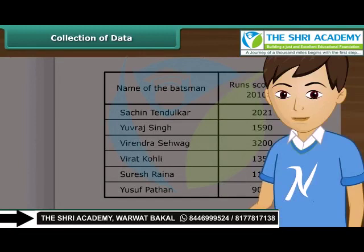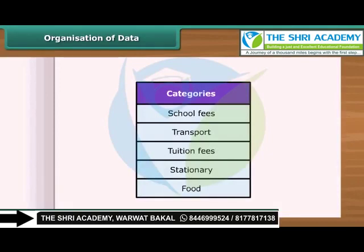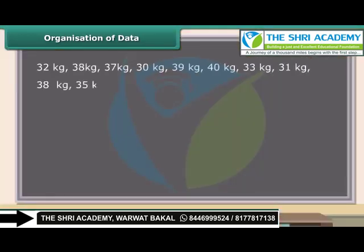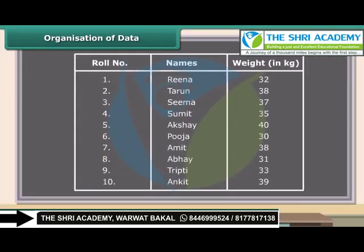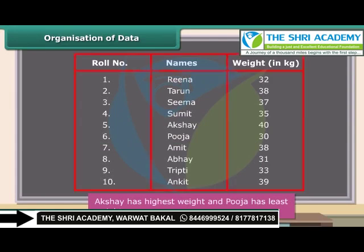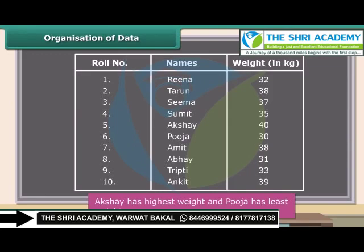So children, unless and until you don't collect the appropriate data, you cannot know the desired information. We collect data to record and organize it. Look at the following data. A class teacher of class 7 listed the weight of 10 students. Is this data easy to understand? Now look at this data — you can easily know which student has the highest weight and which has the least. So when we put data in a proper table, it becomes easy to understand and interpret. We can put many kinds of data in tabular form.